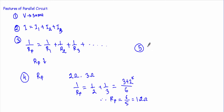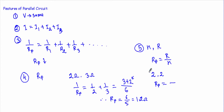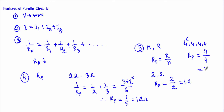Fifth: if we have n resistors each with equal resistance value R, then Rp = R/n. For example, if I have two parallel resistances of 2 ohms each, Rp = 2/2 = 1 ohm. If I have four resistances of 4 ohms each connected in parallel, Rp = 4/4 = 1 ohm.